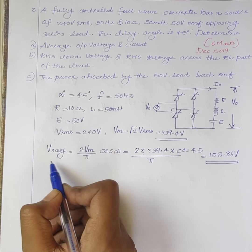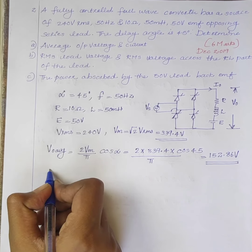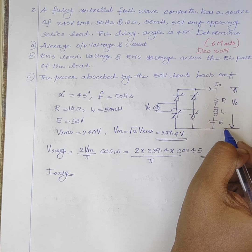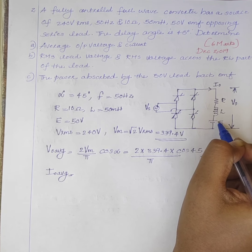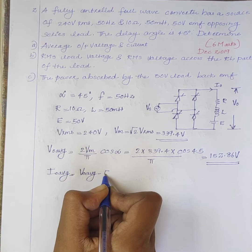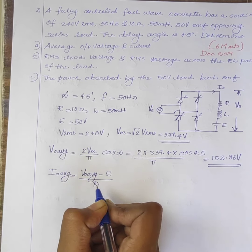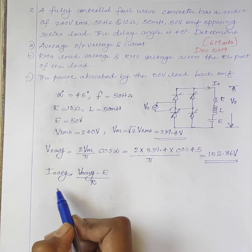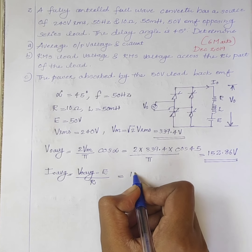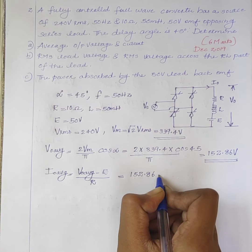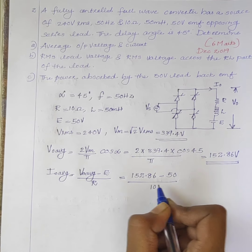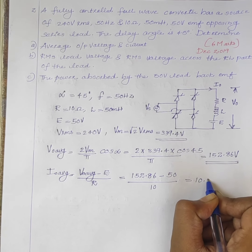This is the average value of output voltage. Next is the average value of output current. By applying mesh analysis, I0 average equals V0 average minus E, divided by R. Which is equal to 152.86 minus 50, divided by 10, which is equal to 10.28A.